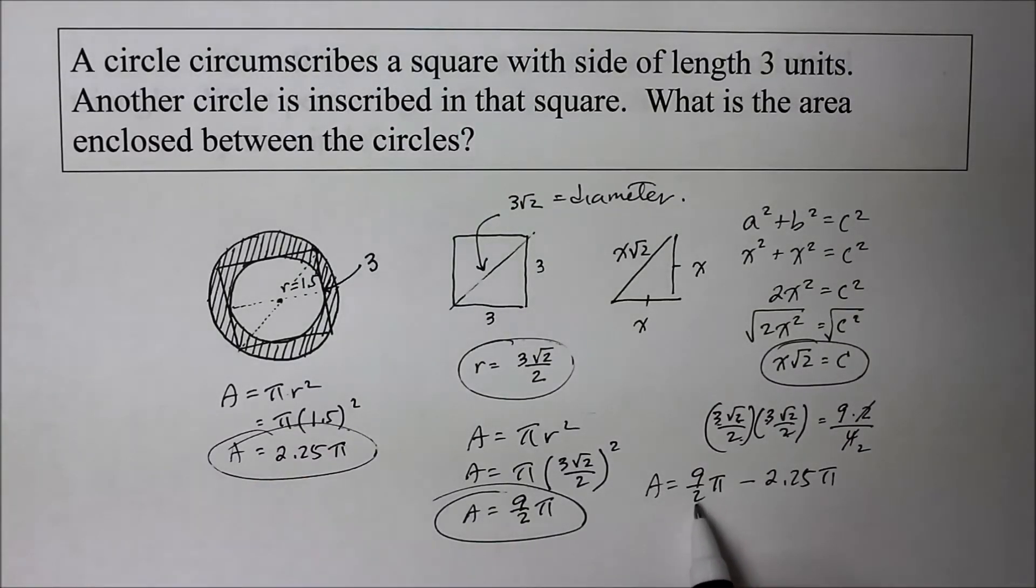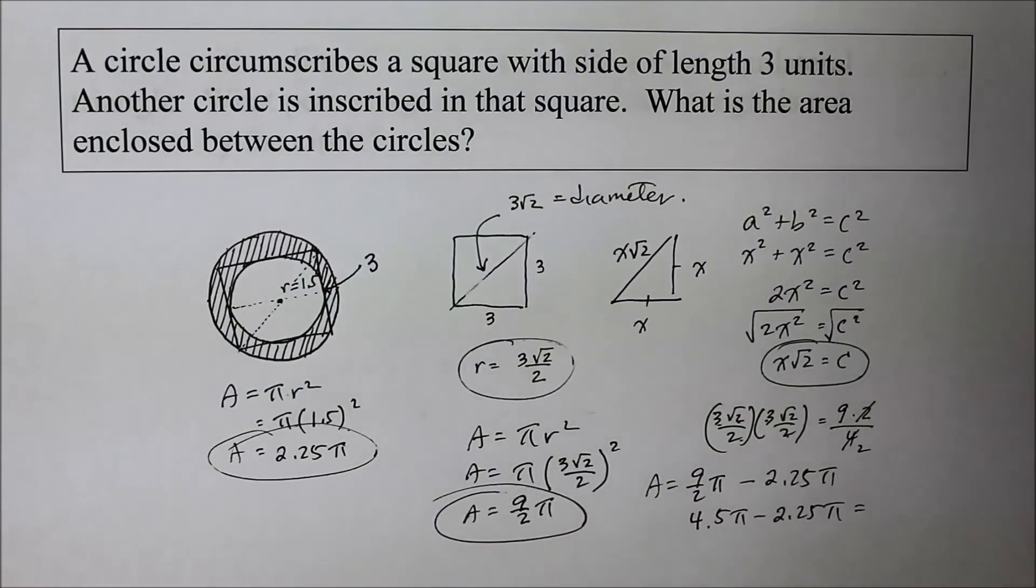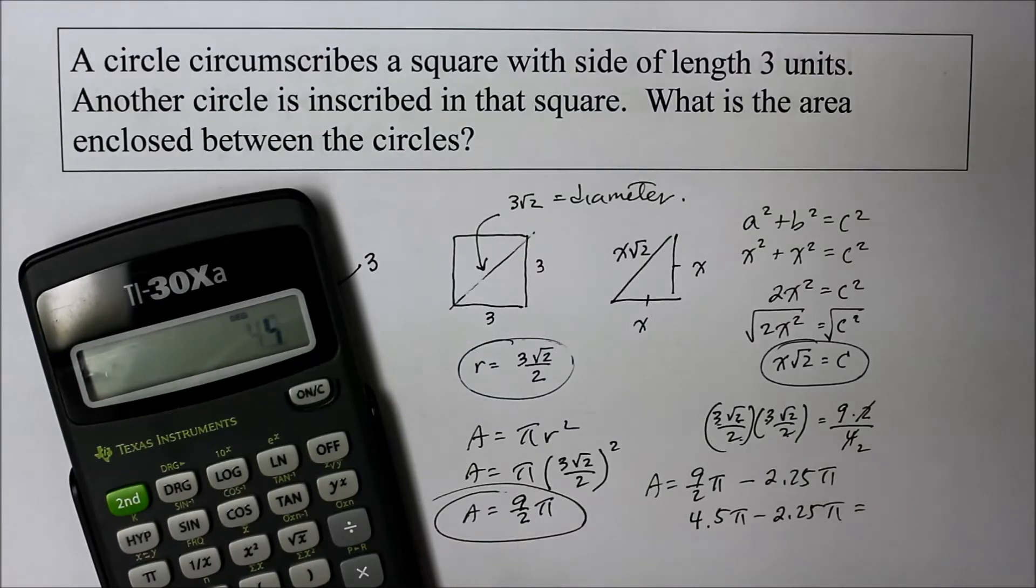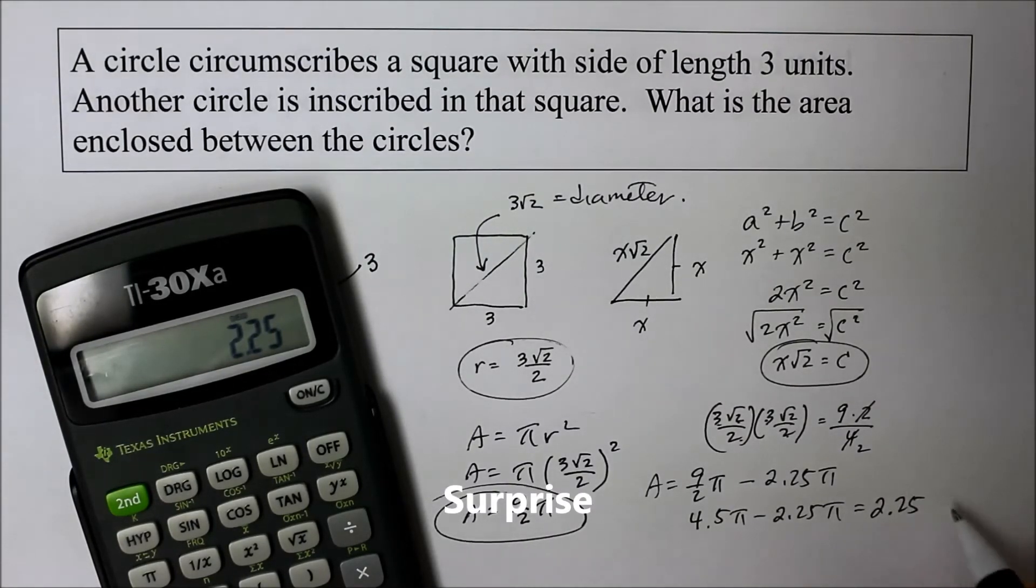9 over 2, isn't that like saying 4 and a half or 4.5 pi minus 2.25? So, yes, I must, in case I don't want to make a mistake. 4.5 minus 2.25?